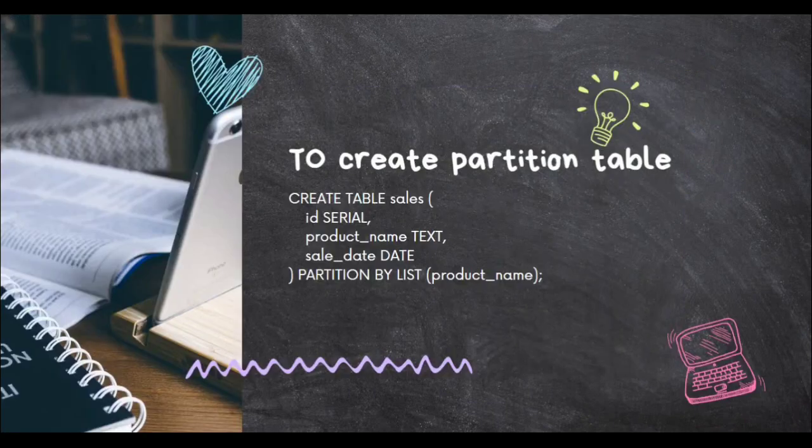So how do we create that partition table? The table is called sales. The sales table contains columns: id, product name, and sale date. We are going to create a list partition based on the product name.